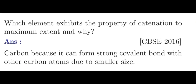Question number 1. Which element exhibits the property of catenation to the maximum extent and why? The answer is carbon, because it can form strong covalent bonds with other carbon atoms due to its smaller size.